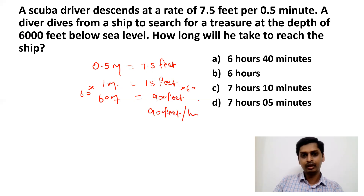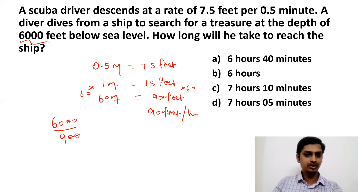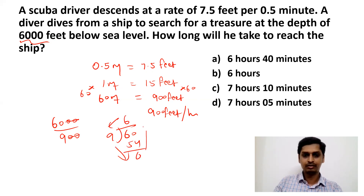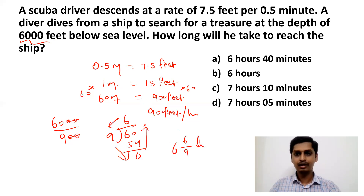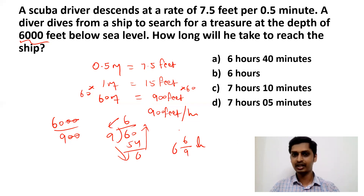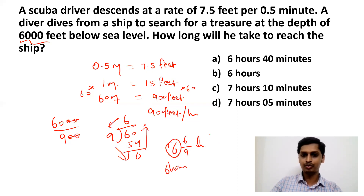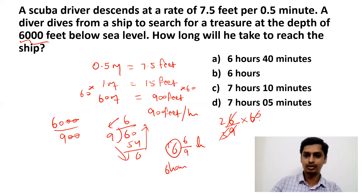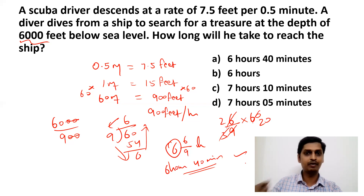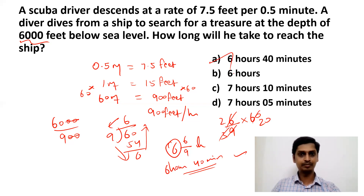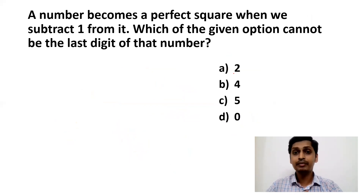He needs to cover 6000 feet at 900 feet/hour: 6000 ÷ 900 = 60/9 = 6 and 6/9 hours. Converting 6/9 hours to minutes: (6/9) × 60 = 40 minutes. So the answer is 6 hours and 40 minutes. Now moving to the next question: a number becomes a perfect square when we subtract 1 from it. Which of the given options cannot be the last digit of that number?